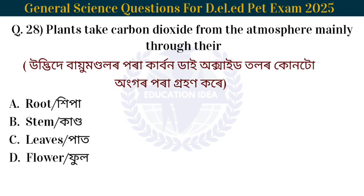Next question: Plants take carbon dioxide from the atmosphere mainly through which part? Plants absorb carbon dioxide from the atmosphere mainly through their leaves.